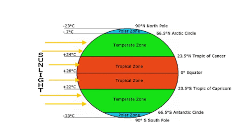Our planet Earth is divided into three major climate zones: tropical, temperate, and polar zones. Tropical regions are the low latitude located near the equator. Temperate regions are the middle latitude, and polar regions are the high latitude.